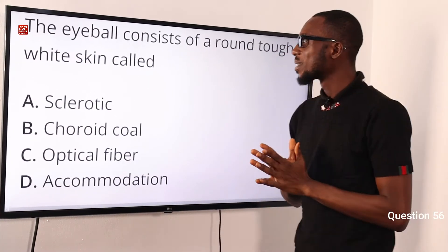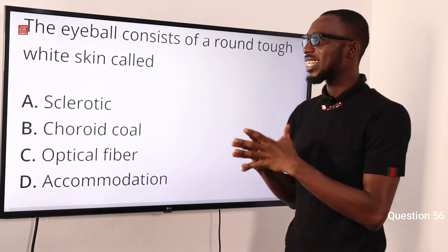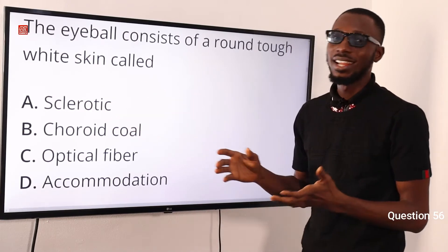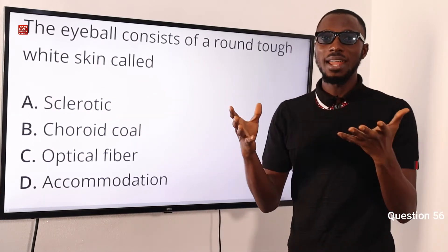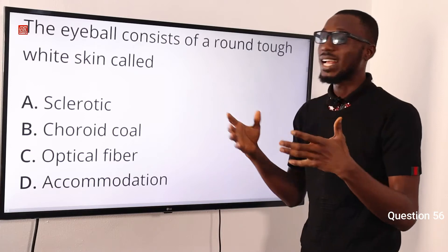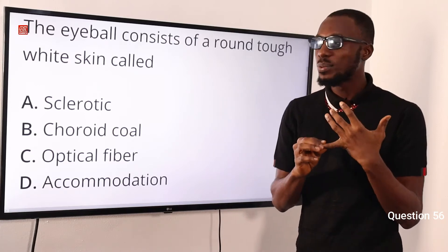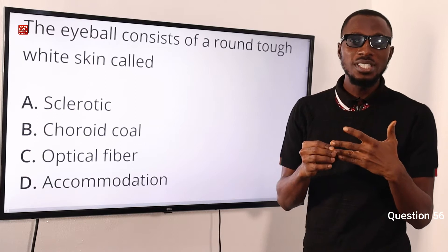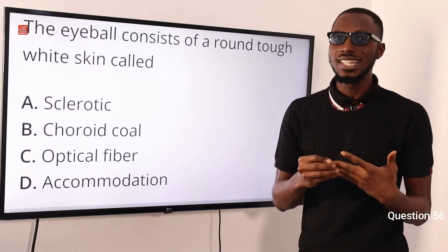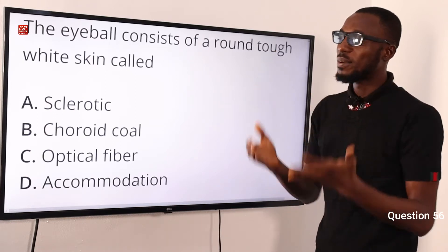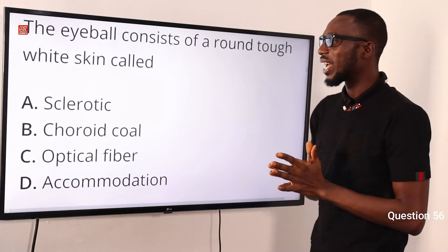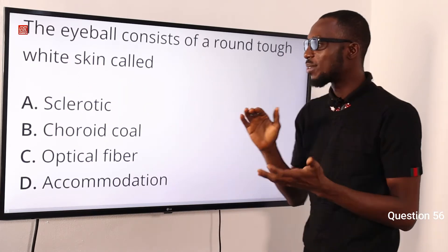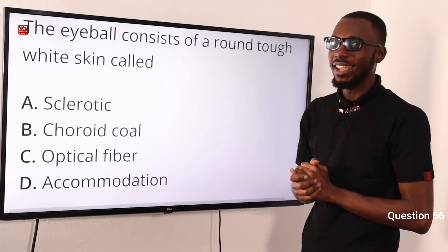Question 56: The eyeball consists of a round, tough, white skin called what? The answer is the sclerotic. The walls of the eyeball have three layers: the outermost, which is the sclera; the middle, which is the choroid; and the innermost, which is the retina. So this describes the sclera or the sclerotic. The correct option is option A.